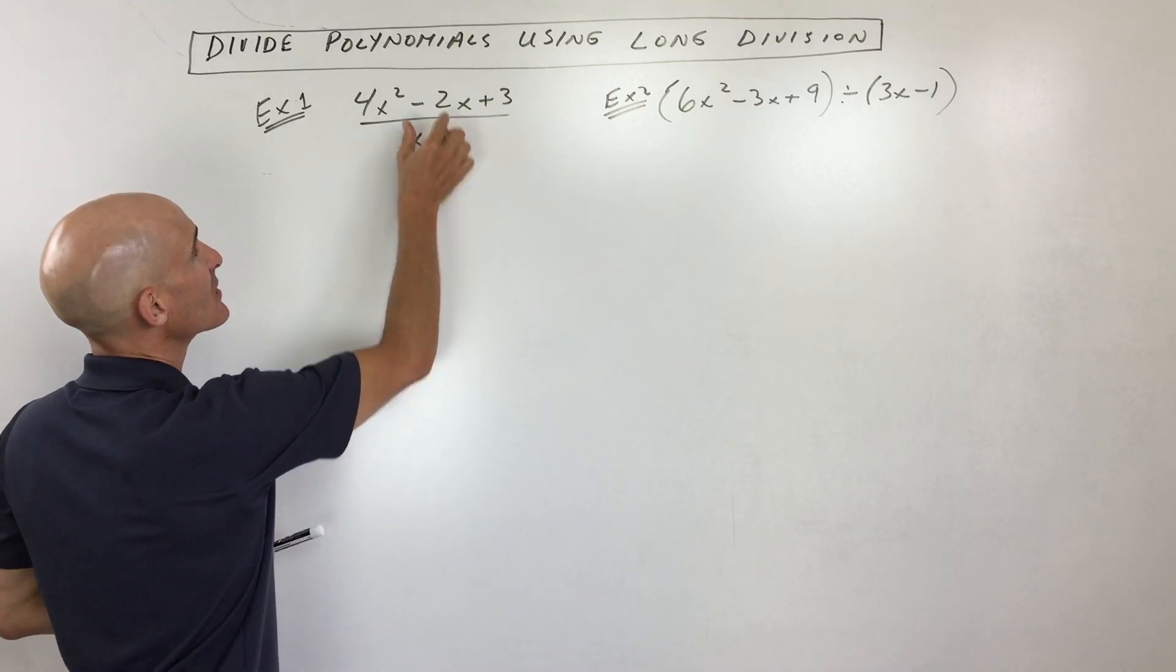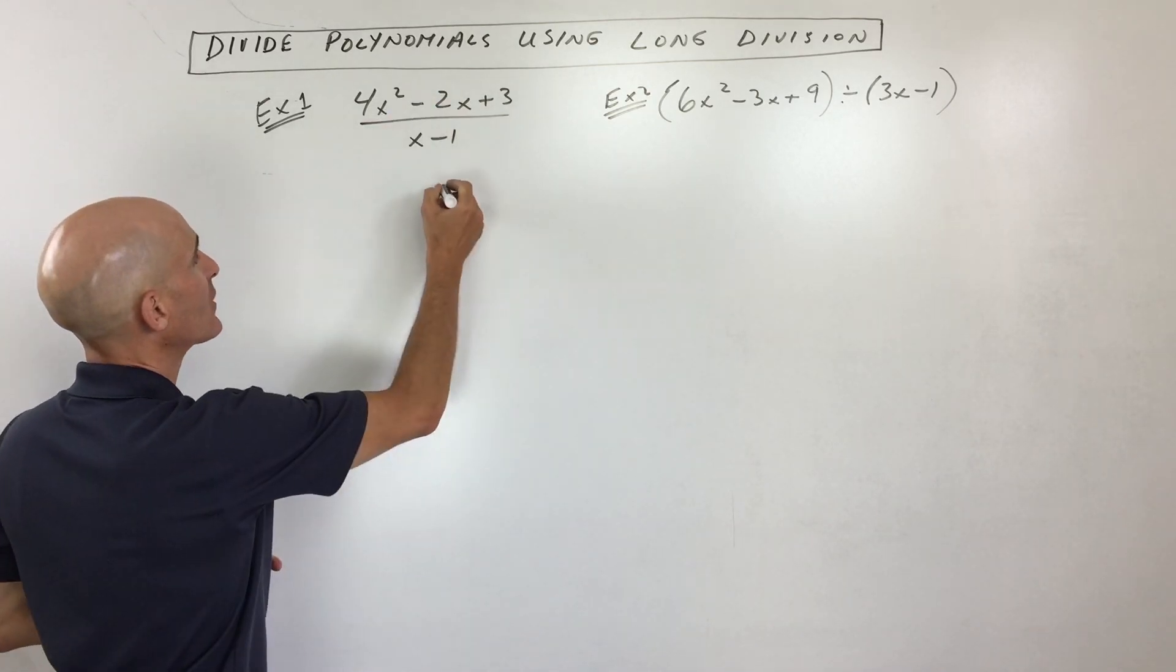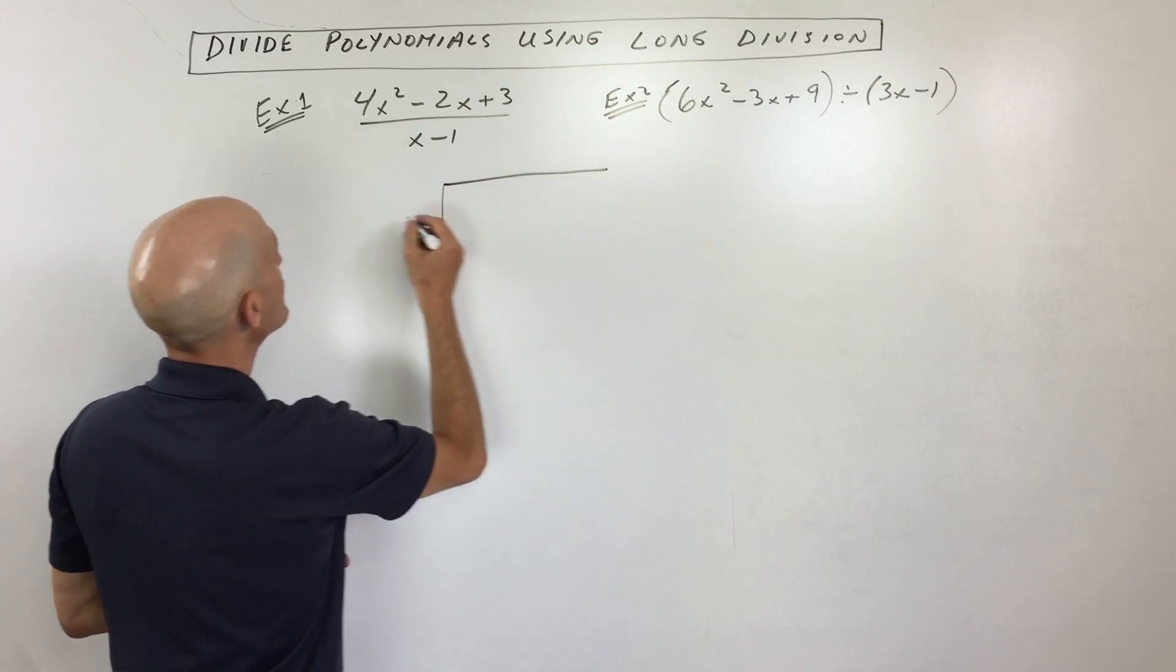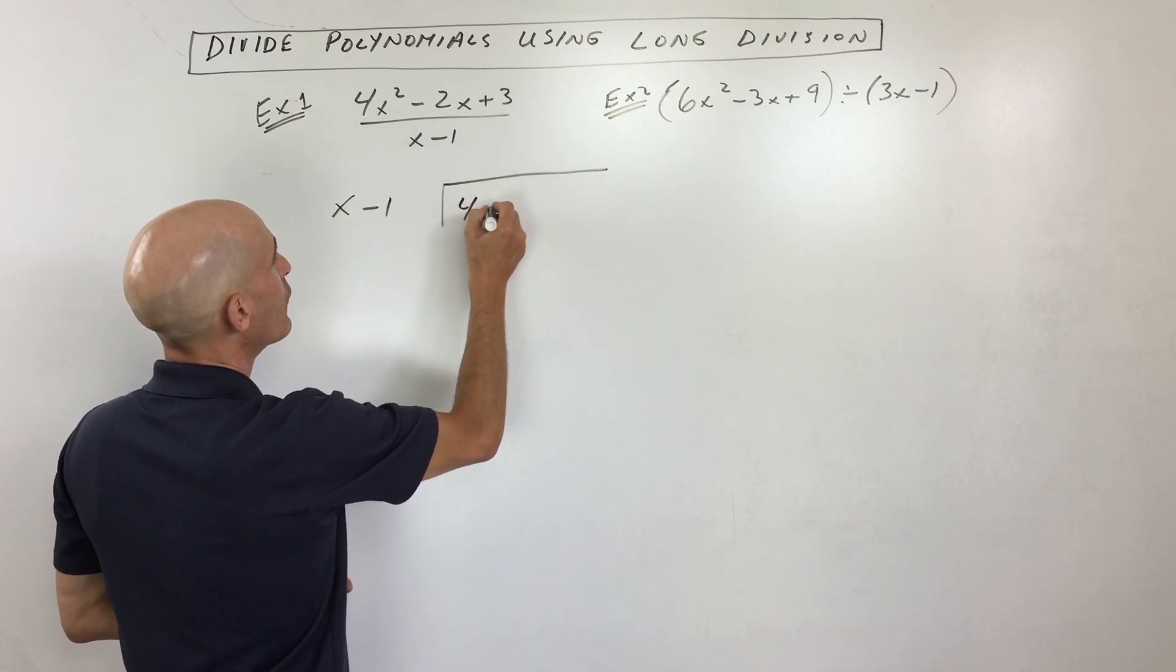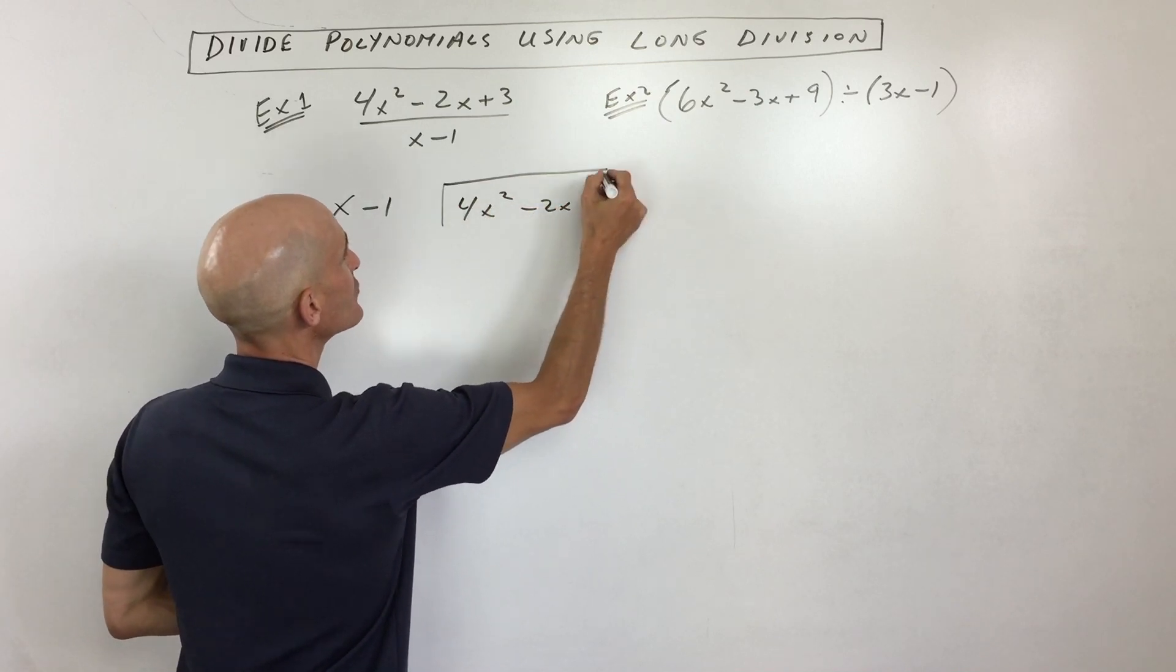I'm trying to see how many times does this go into this. So let's set it up like a long division problem. What I have here is I've got x minus 1 is dividing into 4x squared minus 2x plus 3.